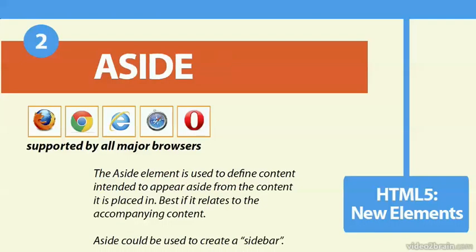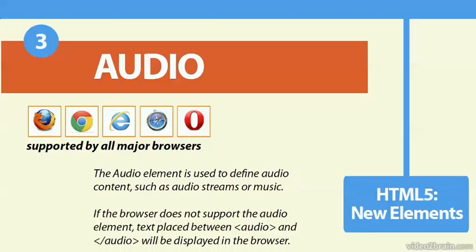The aside tag is one we'll actually be using in our blog project. It's supported by all the major browsers, and it's used to define content intended to stand on its own in a sidebar. The audio tag is also supported by all the major browsers, and it's used for audio content such as music or audio streams.